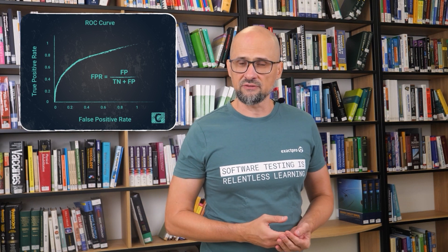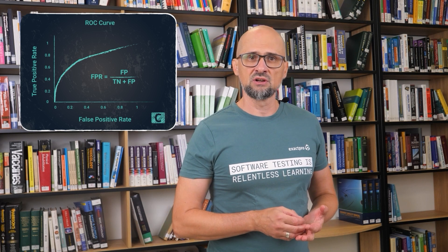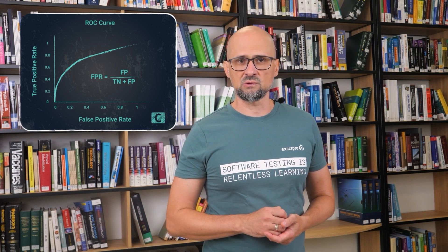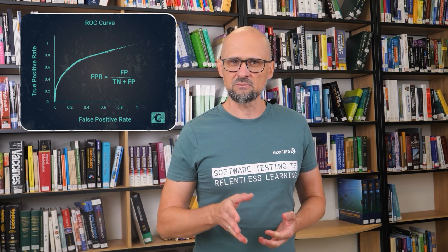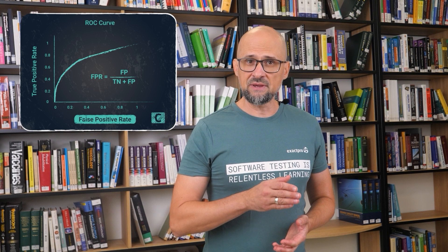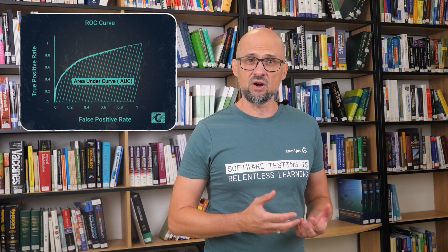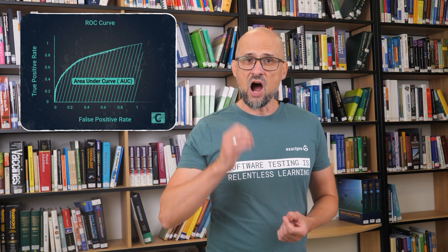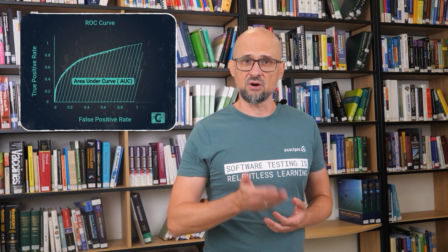There are numerous other metrics for different types of machine learning problems. The receiver operating characteristic curve (ROC curve) is a graphical plot that illustrates the dependence of the correct positive classification proportion on the false positive classification proportion when varying the threshold of the decisive rule. The ROC curve is plotted with true positive rate (TPR), also known as recall, against the false positive rate (FPR), with TPR on the y-axis and FPR on the x-axis. The area under the curve (AUC) represents the degree of classifier separability, showing how well the model distinguishes between classes — the higher the AUC, the better the model predictions.